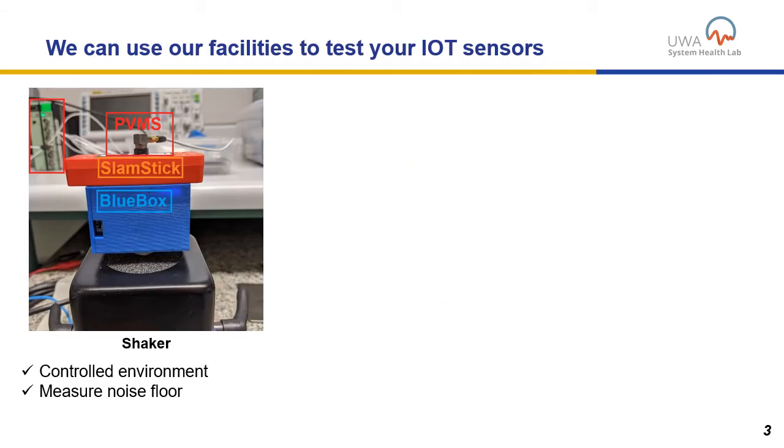In Living Lab, we can trial your sensors using our facilities, and one of them would involve a shaker. This provides us a controlled environment where we can measure the noise floor because we can isolate all the external noises and input a vibration amplitude and frequency that we want.